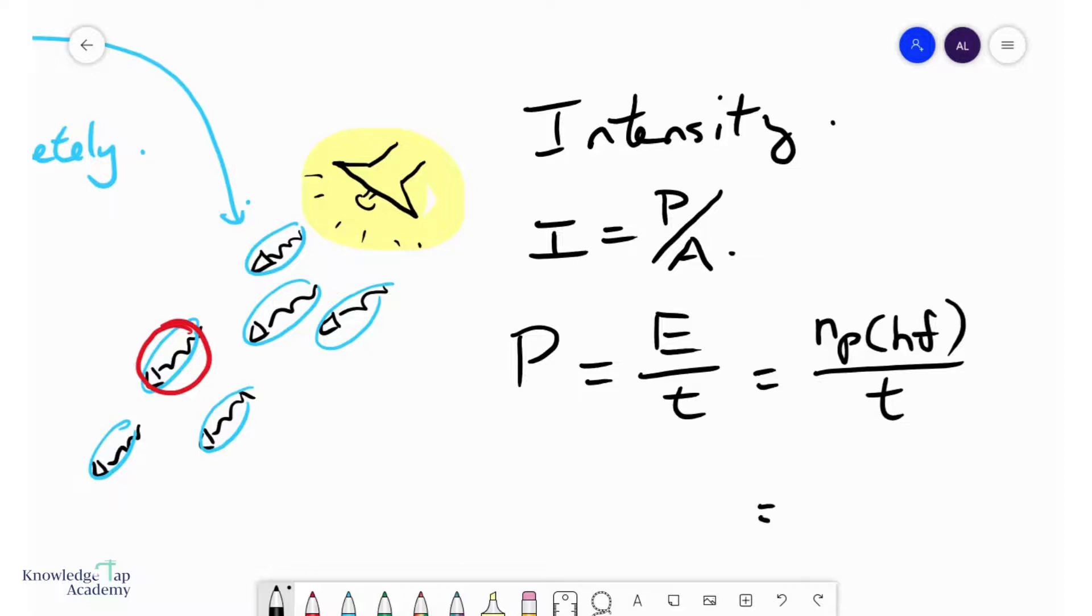And so here we go, this can be written as the rate at which photons are emitted, Np over T multiplied by HF.